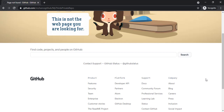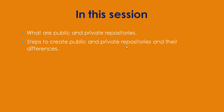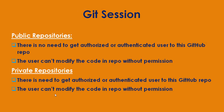Looking at my presentation summary: for a public repository, there is no need to get an authorized or authenticated user to view the GitHub repo, but the user cannot modify the code without permission. For a private repository, the user must be authorized or authenticated, and cannot modify code without permission. With a public repository URL the user can see the files but cannot modify them, whereas with a private repository, an unsigned-in user cannot see the interface or files at all.